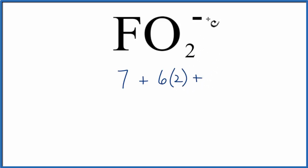Plus, this means we have 1 additional valence electron, so we'll add that, and that will give us 20 total valence electrons for FO2-. For this structure, fluorine will go at the center, and then oxygens will go on either side.